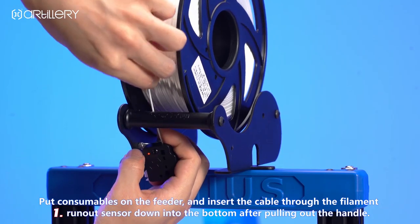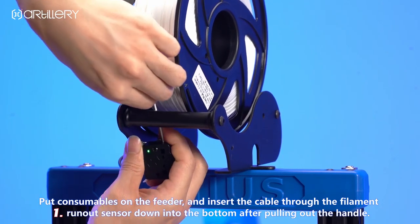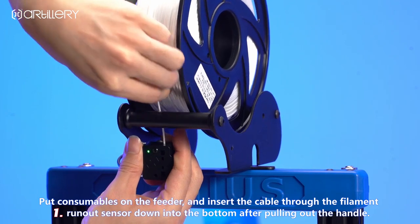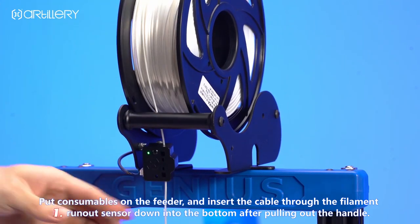Put consumables on the feeder and insert the cable through the filament run-out sensor down into the bottom for pulling out the hand lock.